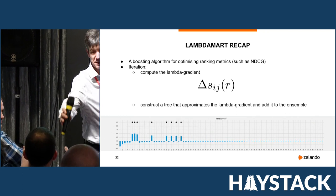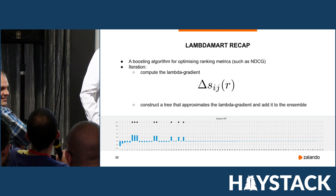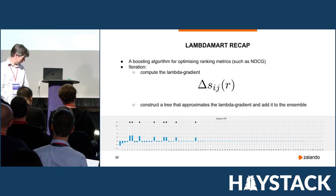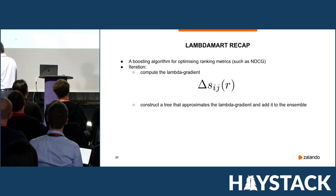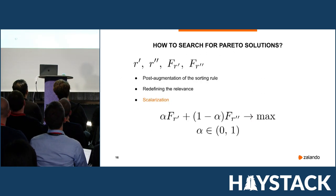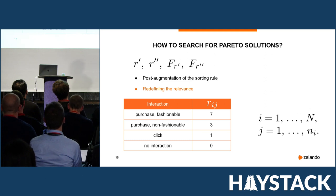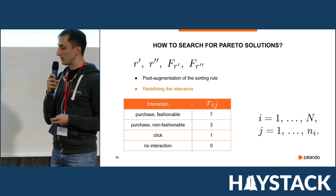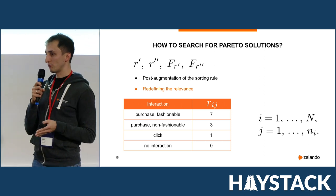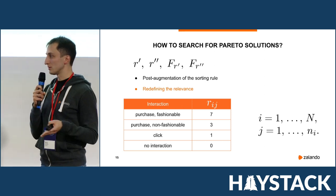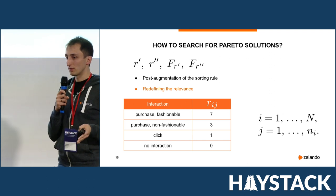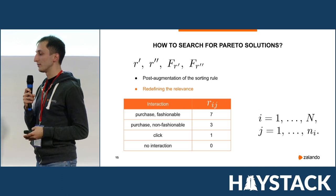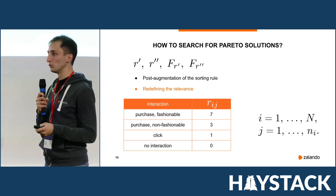Question: When you compute NDCG, you simply take the clicks or purchases — do you compensate for any kind of position bias? Answer: In these experiments, we were not correcting for any position bias, but this is something we're working on. There's a separate stream concerned with position bias removal.